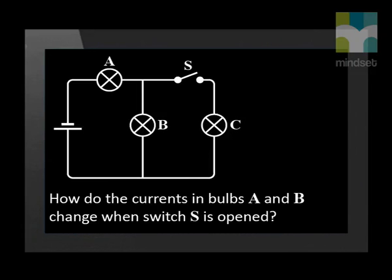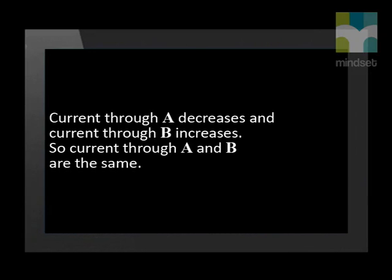How do the currents in bulbs A and B change when switch S is opened? Both now have the same amount of current. When the switch was closed, A was brighter than B. So current A now decreases and B increases to make them both the same.